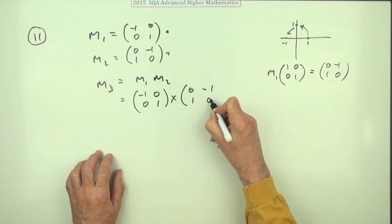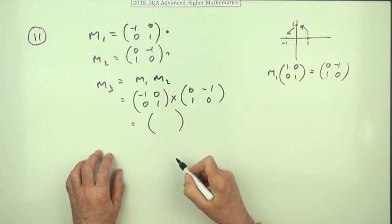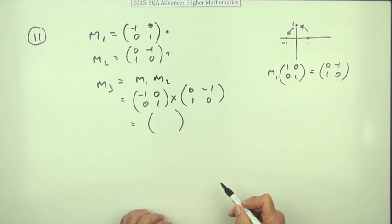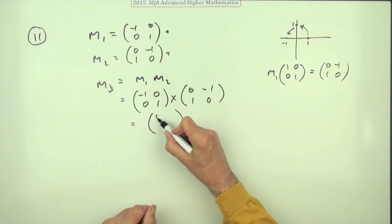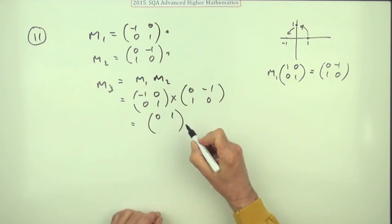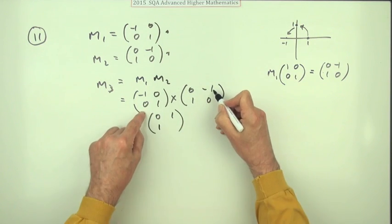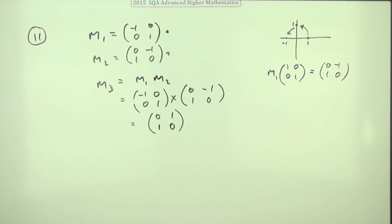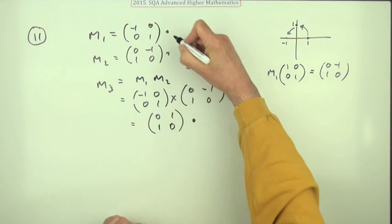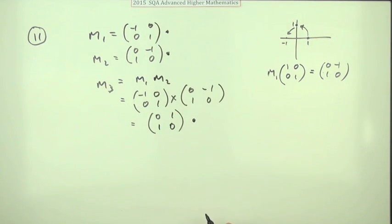So it's going to be negative one zero, zero one, times zero negative one, one zero. It'll be another two by two matrix, and that's going to be zero one, one zero. That's a mark. It's quite a nice wee question this, isn't it?